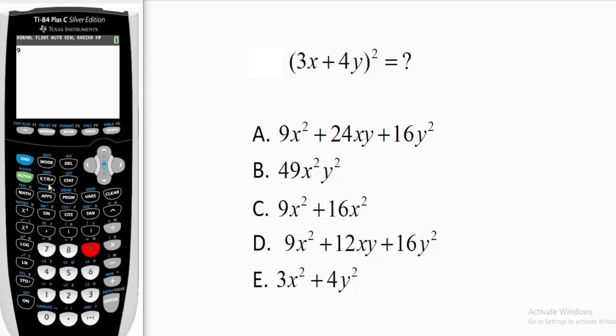Let's begin with option A. Option A we have 9x to the power 2, plus 24xy alpha and this button for y to come out, plus 16y squared alpha and this button for y to come out, square. That's it guys. Let's press enter and see if we are going to get 196.